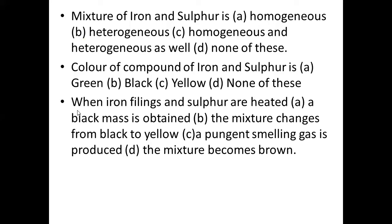When the iron filings and sulphur are heated — option A: a black mass is obtained; option B: the mixture changes from black to yellow; option C: a pungent smelling gas is produced; option D: the mixture becomes brown. The answer is option A — a black mass is obtained.